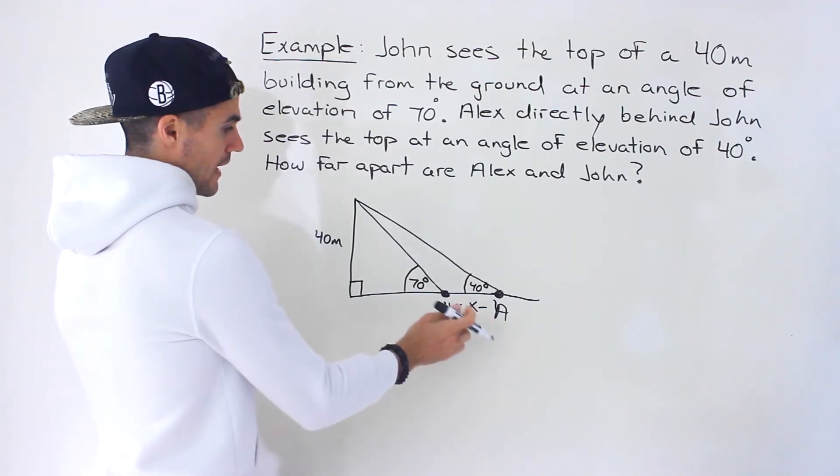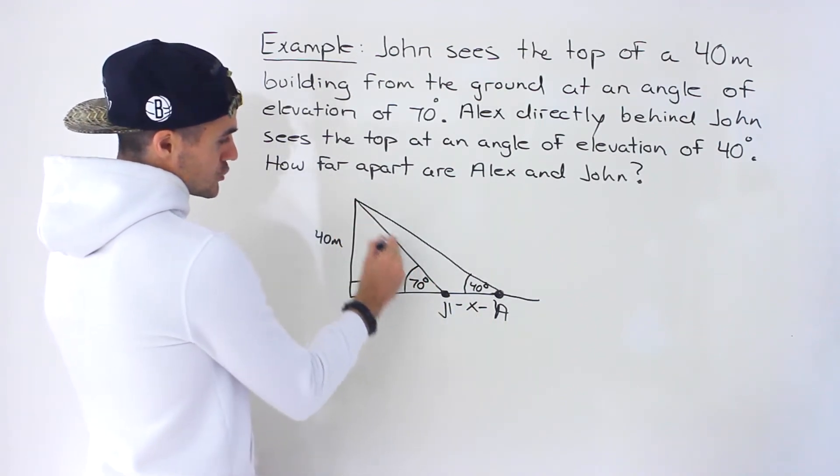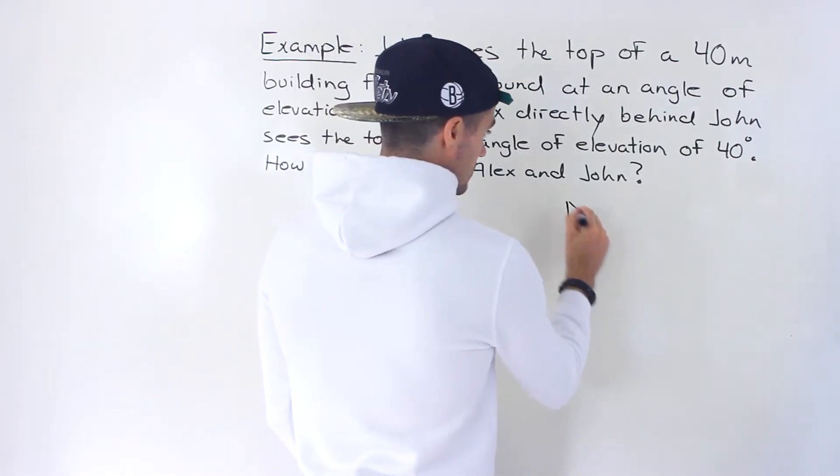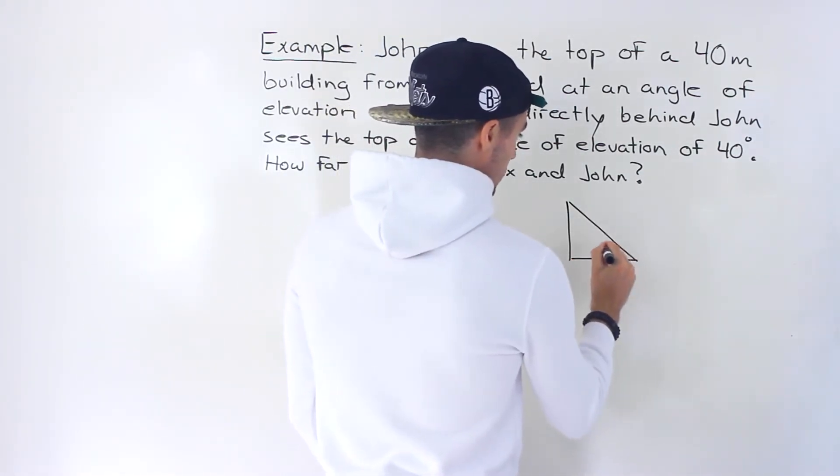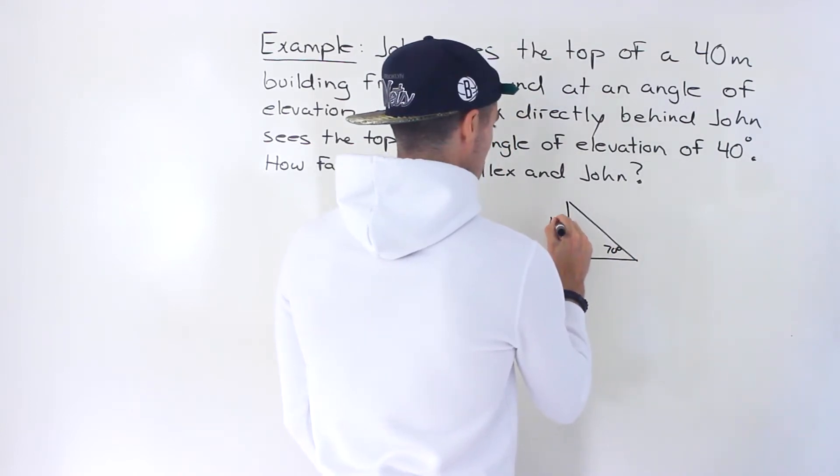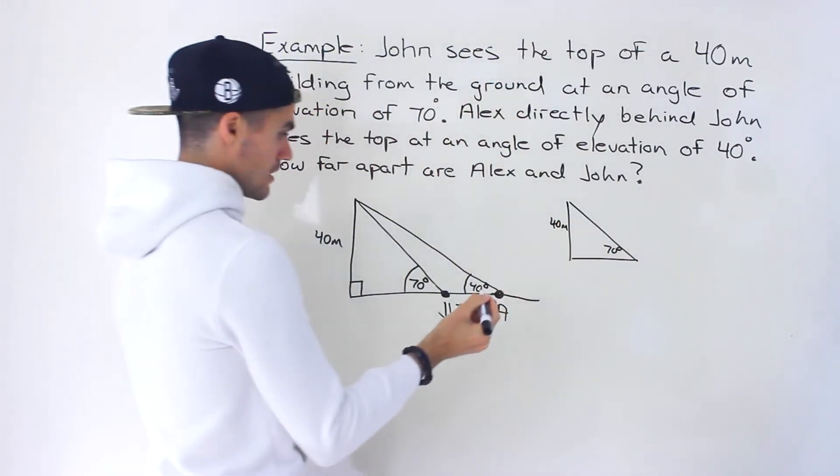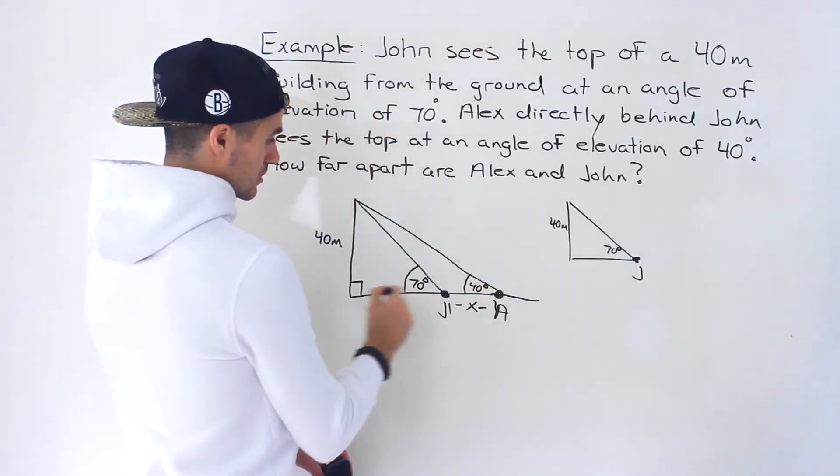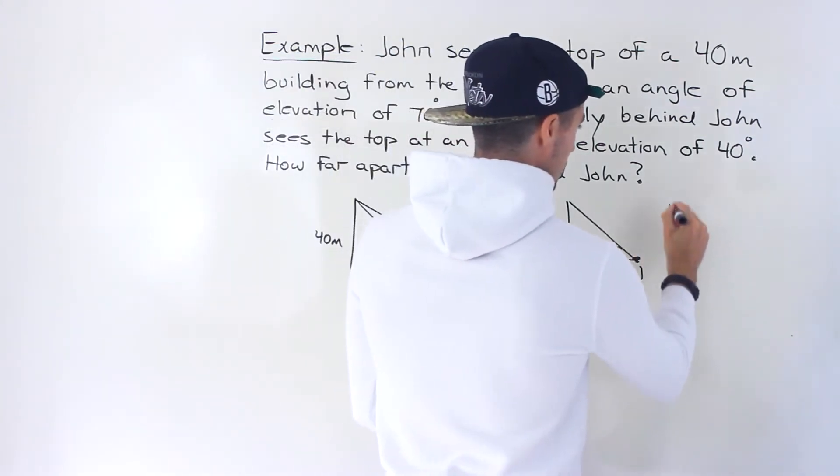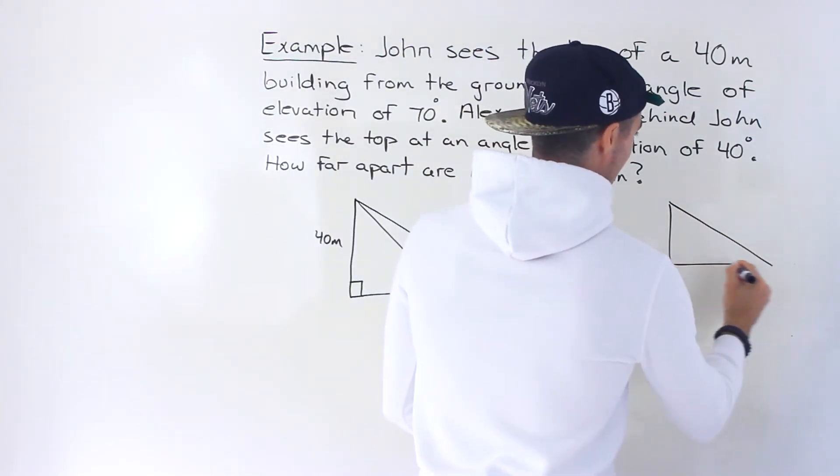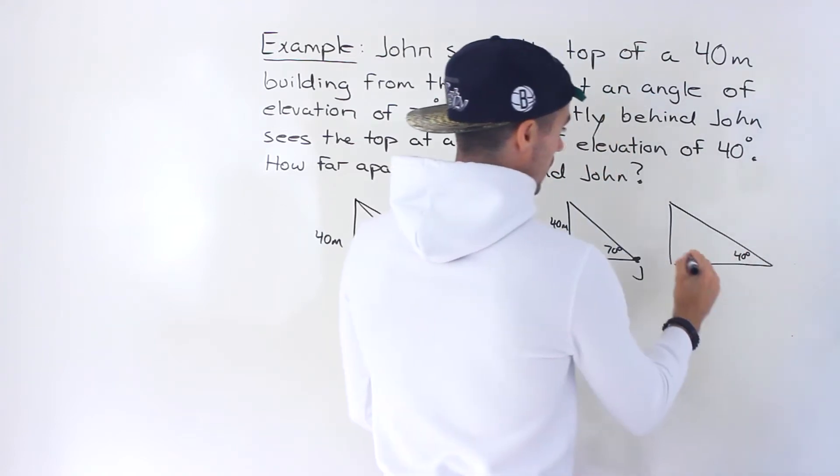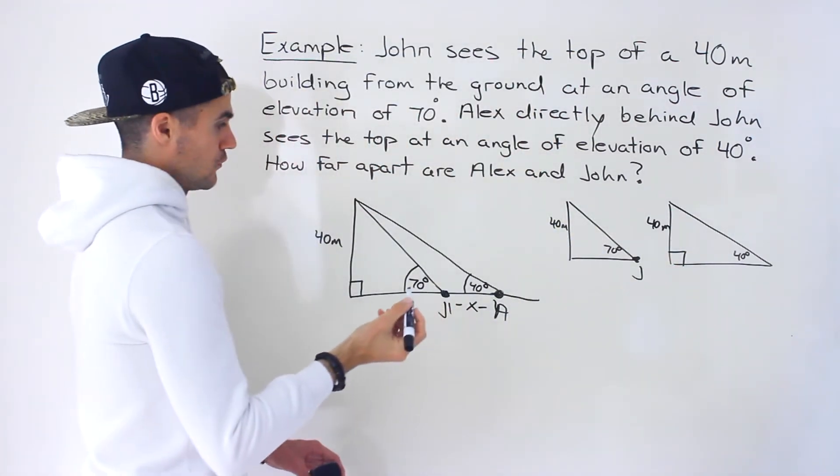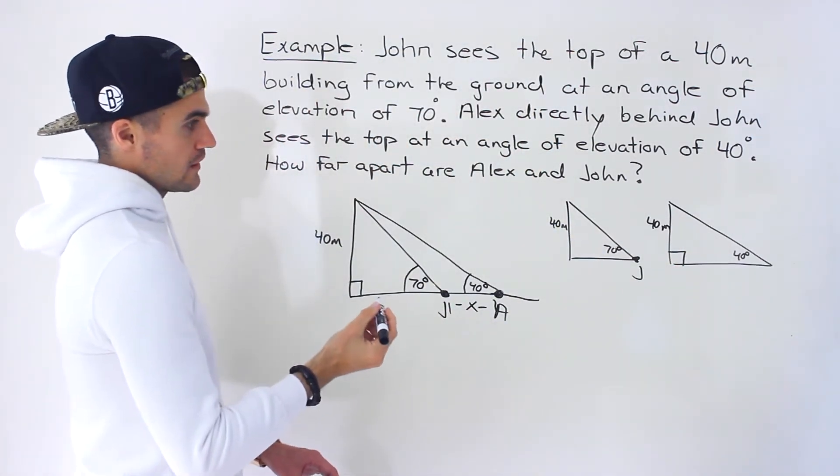Now, in order to solve that, notice that we actually have two right angle triangles. So if we draw them separately, the first one, we got 70 degrees and then we got 40 meters right there. So that's to where John is. And then we have this other right angle triangle, the larger one, which would have an angle right here of 40 degrees. And then it's still 40 meters right here for the building.